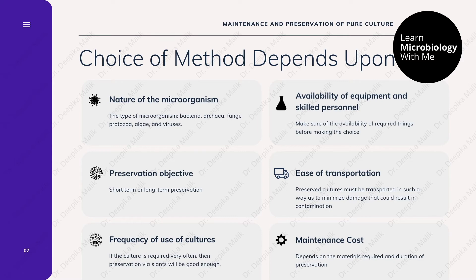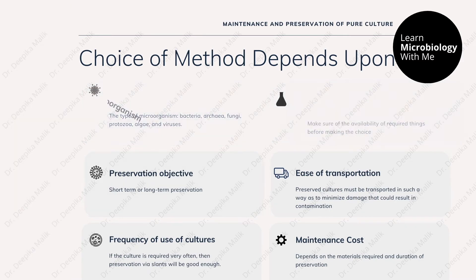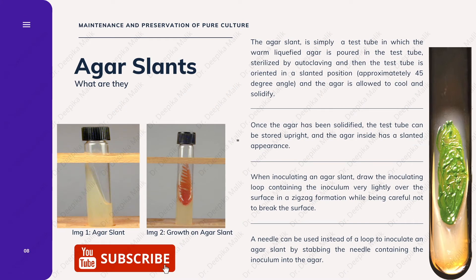The two main methods used to preserve cultures in regular laboratory use are agar slants and glycerol stocks. An agar slant is simply a test tube in which warm liquefied agar is poured, sterilized by autoclaving, and then the test tube is oriented at a slanted position of approximately 45 degrees and the agar is allowed to cool and solidify. Tubes can be covered with cotton plugs or screw caps to keep them contamination free, and once solidified the agar inside has a slanted appearance.